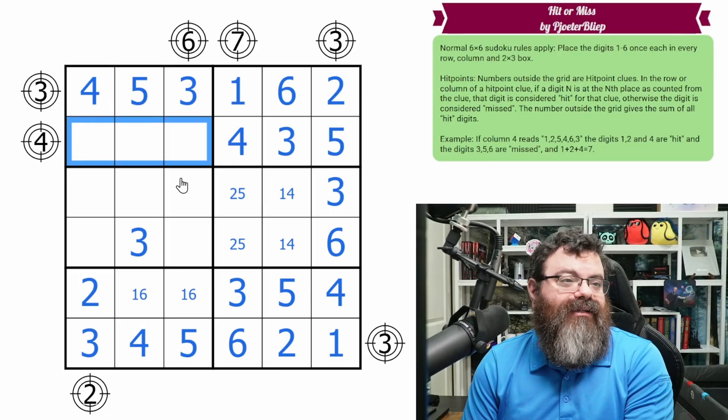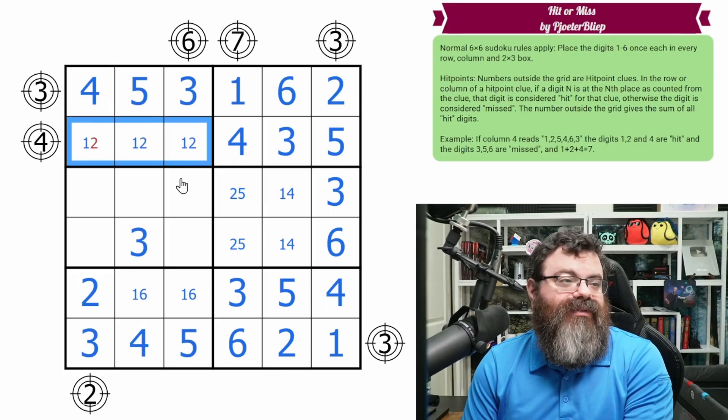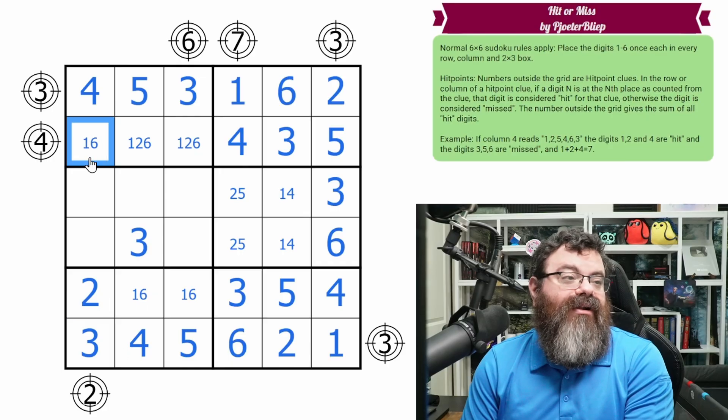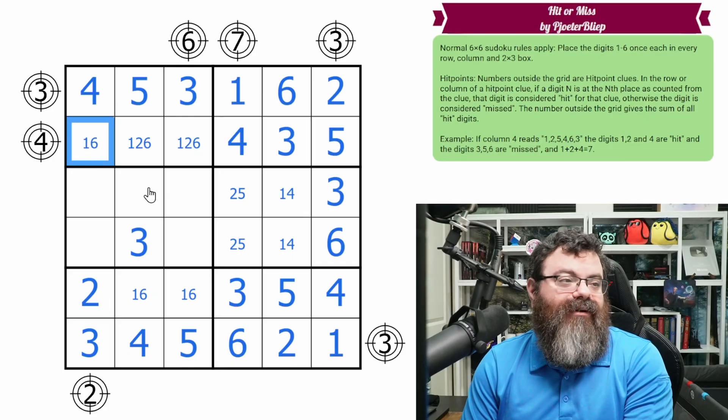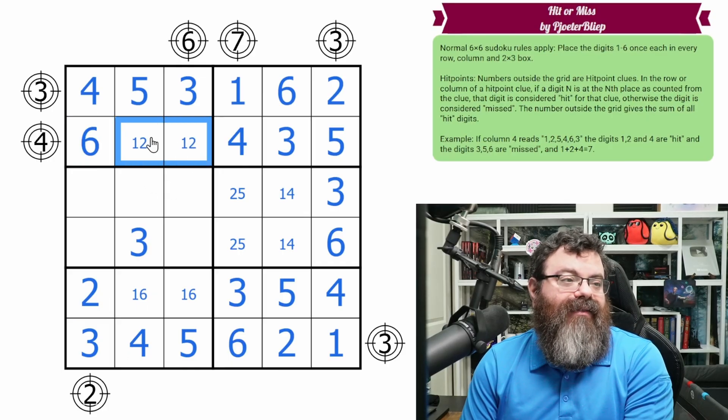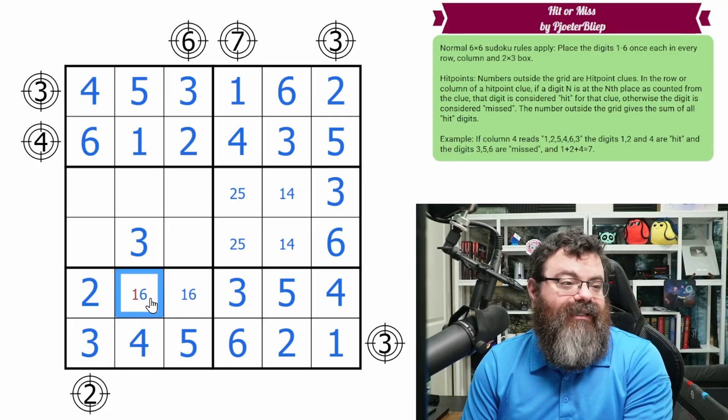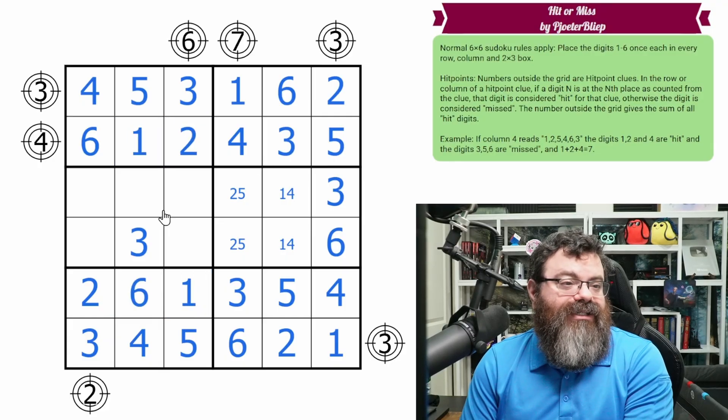Over here we need one, two, six. This can't be two, and it also can't be one because it would be a hit for the four. That's six. And this can't be two, so this is, I'm sorry, this is one and two. That's six and one. I think we're finishing up.